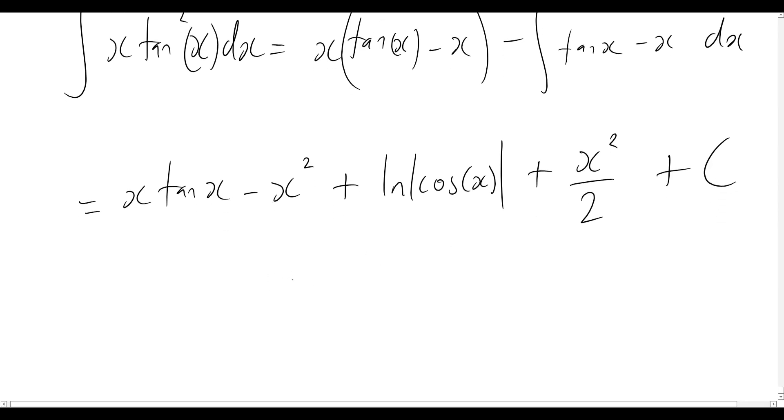All right, so now let's just collect like terms, and our final answer will simply become minus x squared on 2 plus x tan x plus the natural log of cos of x plus c, some constant term there. And that brings us to our answer.